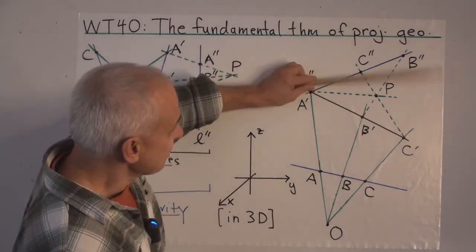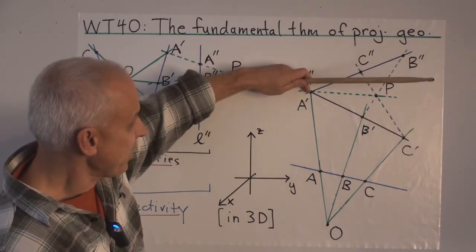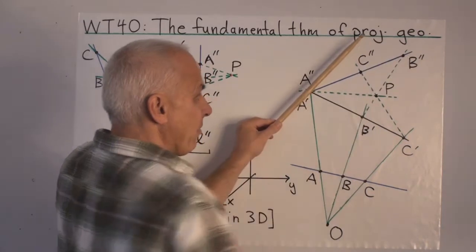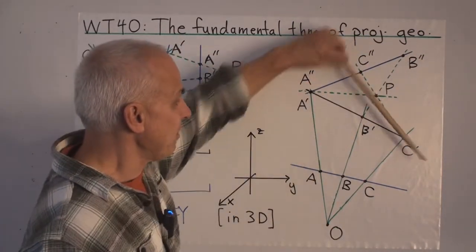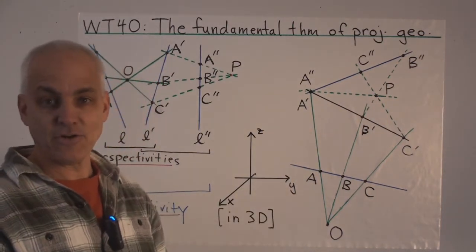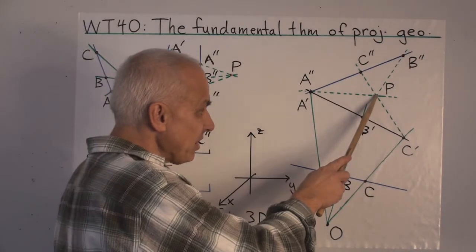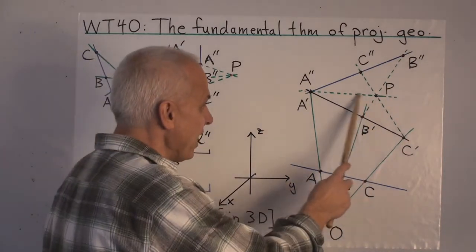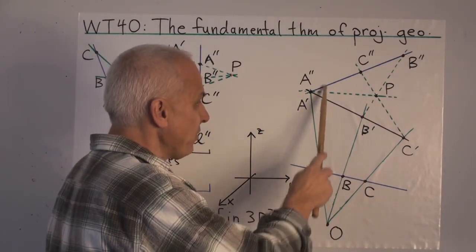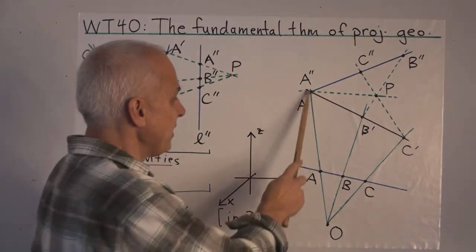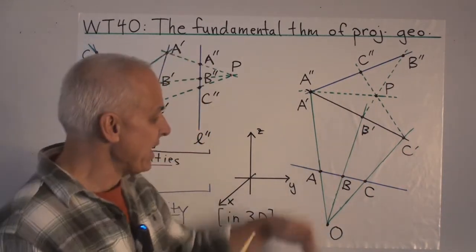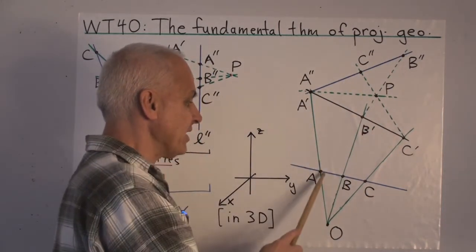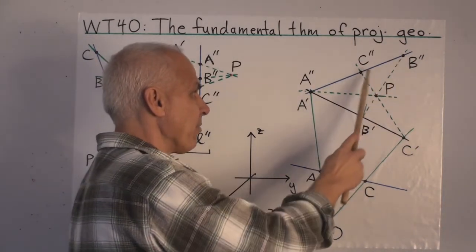Now these two lines are coplanar because they go through the common point A prime. That means if we join B prime with B double prime and join C prime with C double prime, those two lines are going to meet at some point P, and that's going to be the center of our second perspectivity. A perspectivity centered at P sends B prime to B double prime, C prime to C double prime. And what does it do to A prime? Since there's a line through A prime that intersects both lines, it leaves A prime fixed. So it sends these three points to these three points, and combining the two perspectivities, we get a projectivity from this line to this line, sending A, B, C to A double prime, B double prime, and C double prime.